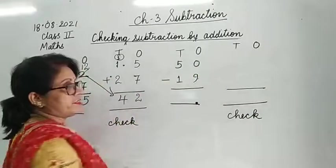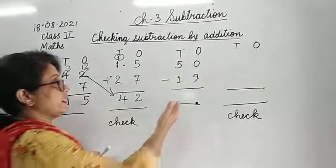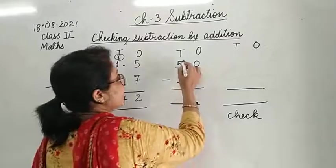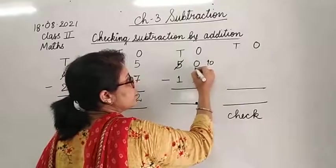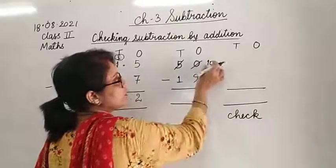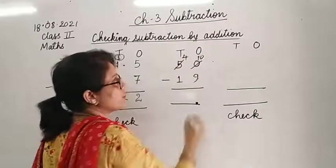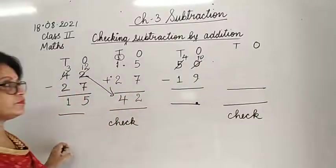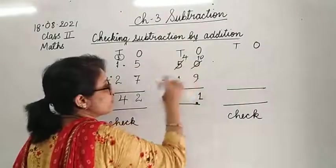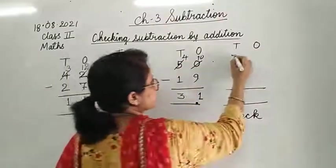Next problem: 50 minus 19. 0 minus 9, we can't do that. We have 5 tens, take 1 ten from there, leaving 4 tens, and 0 plus 10 becomes 10. Now 10 minus 9 is 1. Then 4 minus 1 is 3. Answer is 31. Now we add: 9 plus 1 is 10, write 0 carry 1. Then 3 plus 1 is 4, plus carried 1 is 5. Answer is 50, meaning our subtraction is correct.